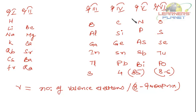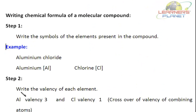The valency of nitrogen is 3, and the valency of oxygen is 2. So in this case, the valency of aluminium is 3 and chlorine is 1.